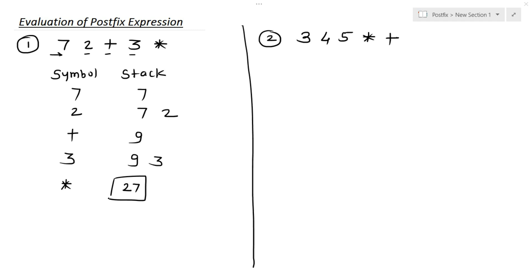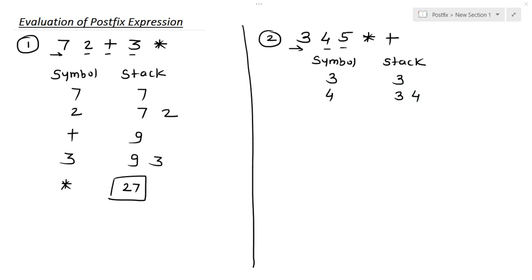Let's solve another example. The expression is: 3 4 5 multiplication plus. Again we make two columns — symbol and stack. We start pushing operands into the stack until the operator comes. The first symbol is 3, it goes into the stack. Next is 4; in the stack we have 3 and 4. Next is 5; in the stack we have 3, 4, and 5.